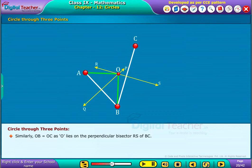Similarly, OB is equal to OC as O lies on the perpendicular bisector RS of BC. Thus, from point O, the points A, B and C are at equal distances.